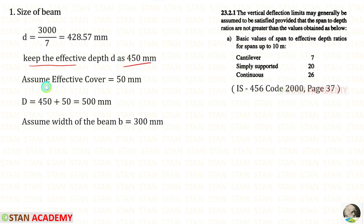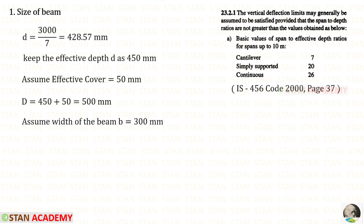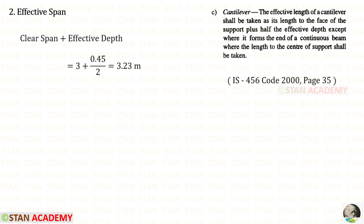Assuming an effective cover of 50 millimeters, the overall depth D will be 450 plus 50, giving 500 millimeters. We assume the width of the beam b as 300 millimeters. We now need to find the effective span, referring to page number 35 of the code book.